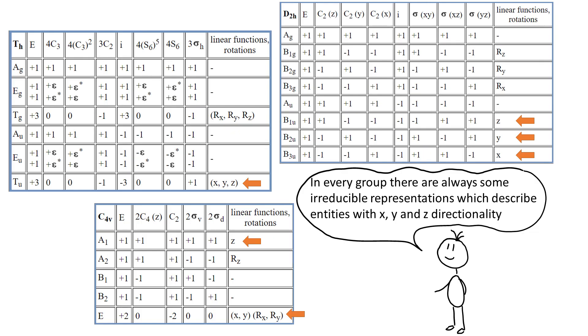First, in every group there are always some irreducible representations which describe entities with x, y and z directionality. Secondly, when we take x, y and z vectors as basis for operations, we can immediately see if the resulting 3x3 matrices are in the block diagonal form or not.